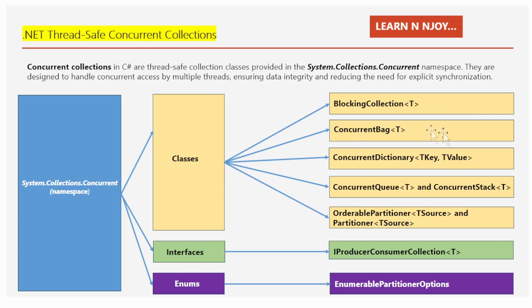Next, there is ConcurrentBag<T>. Imagine a big basket where chefs can toss in and grab ingredients without worrying about the order. It's perfect for situations where you just need to collect and use items without a specific sequence.